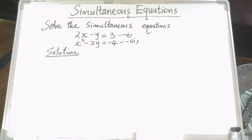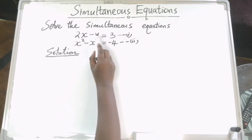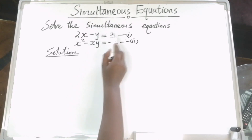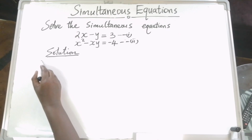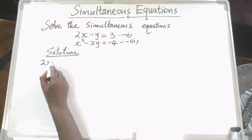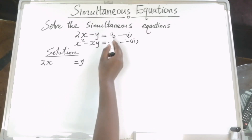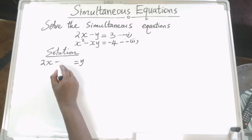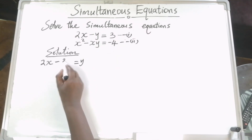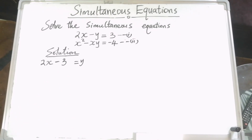Now, from equation one, we can make y the subject. If we add y to both sides of the equation, we're going to have 2x. Taking y to the other side and subtracting 3 from both sides, we're going to have 2x minus 3. So y will be 2x minus 3.